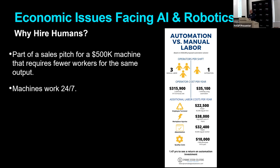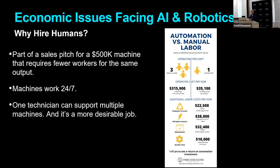Because the machines work 24-7, there are more and more factories in the United States operating in what they call lights-out mode — no lights on in the factory for at least two shifts because there are no people, and the machines don't need any lights. And one technician can support multiple machines. Plus, it's just a more interesting job.